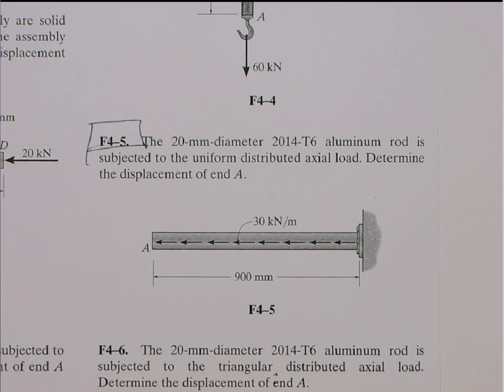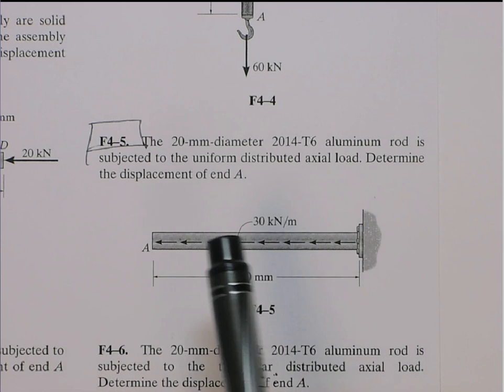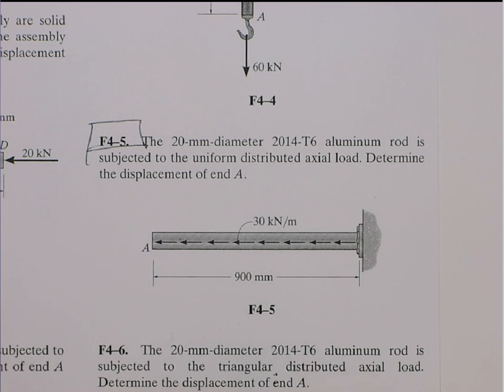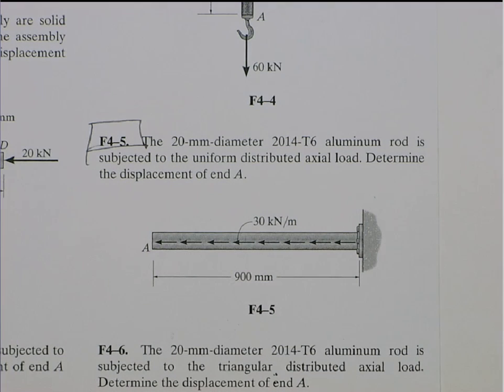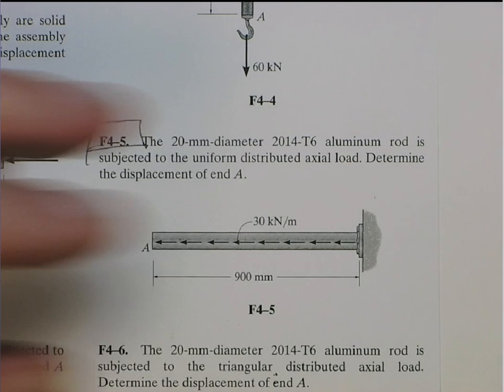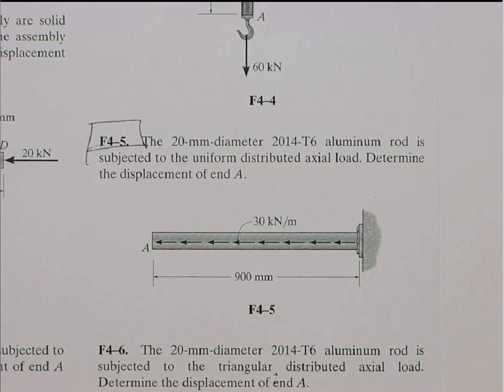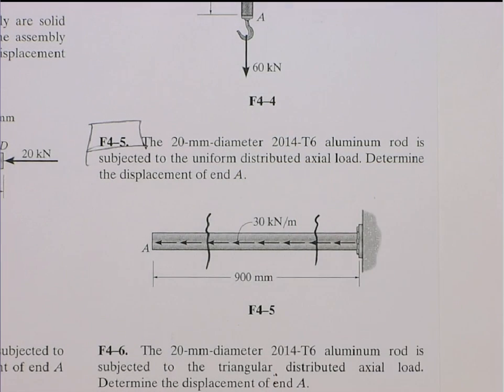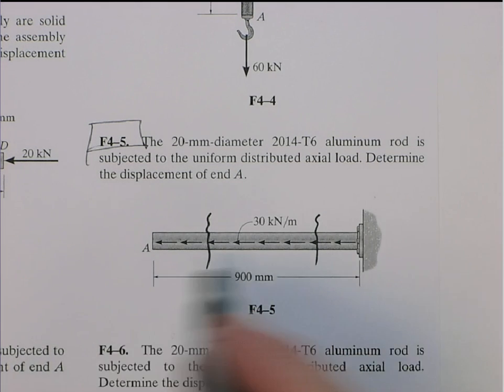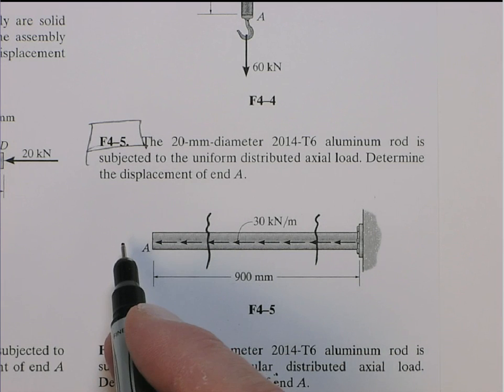In this problem, they want to find the total elongation, the displacement at A, when the rod has a uniformly distributed force. The problem we have here, why you can't use PL over AE, is at every section there is a changing reaction force. The internal reaction force in this element changes with respect to position continuously. It's actually a linear varying function.